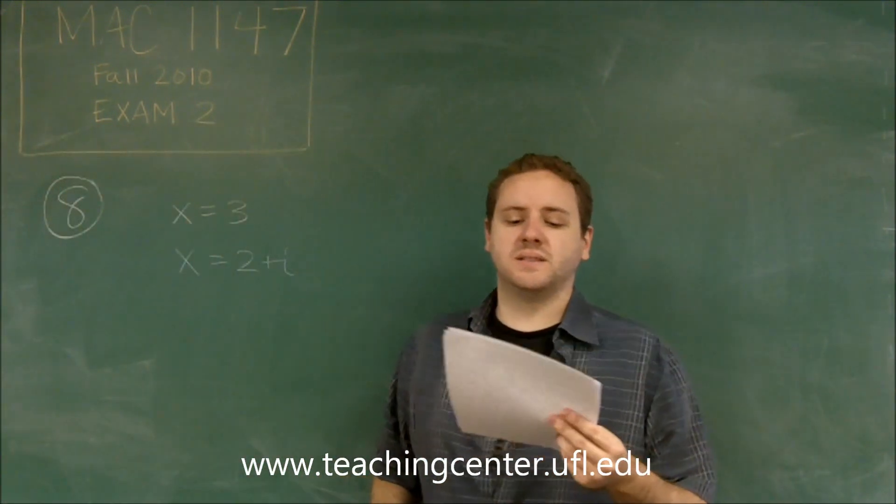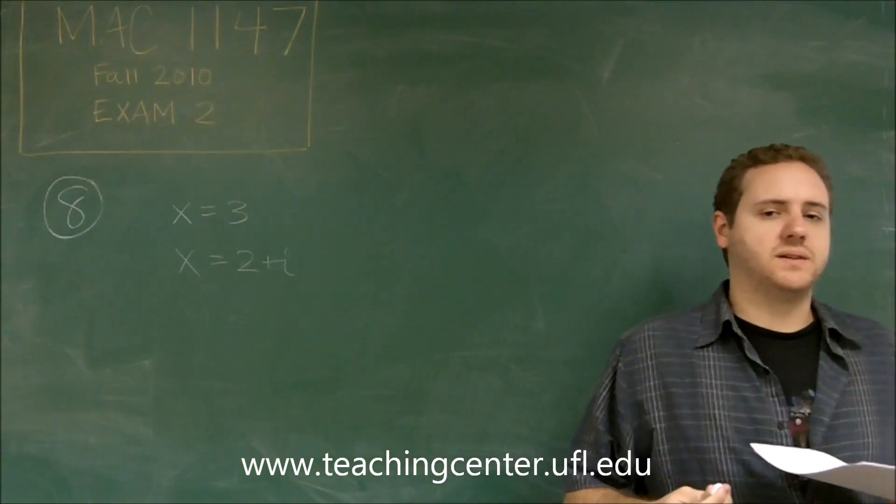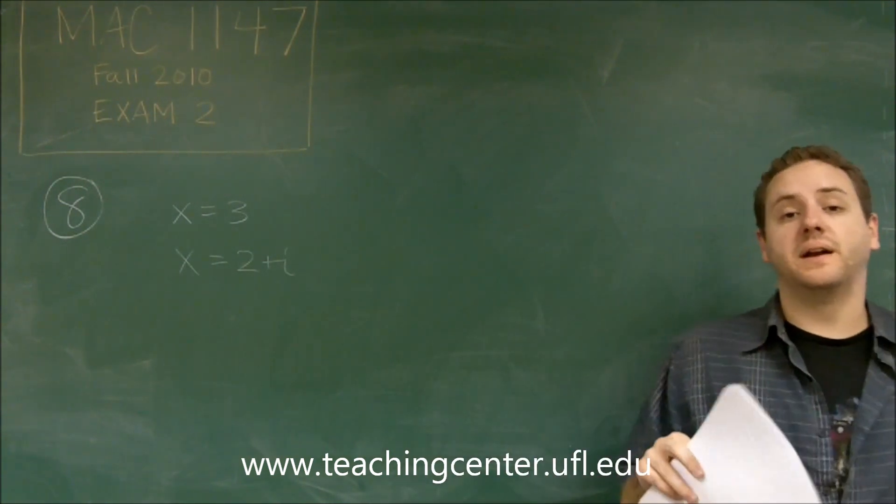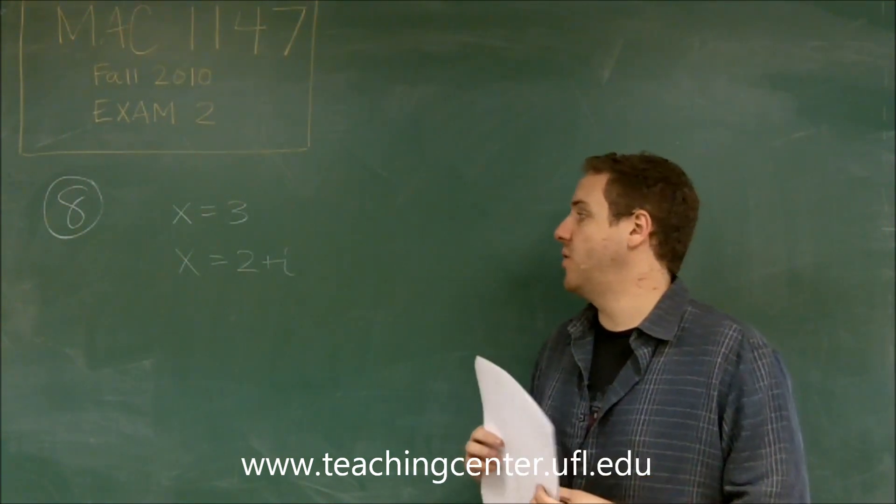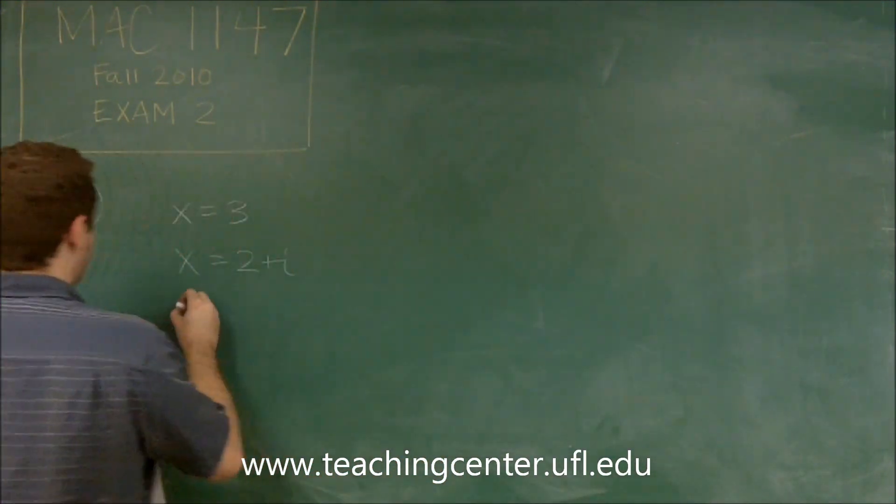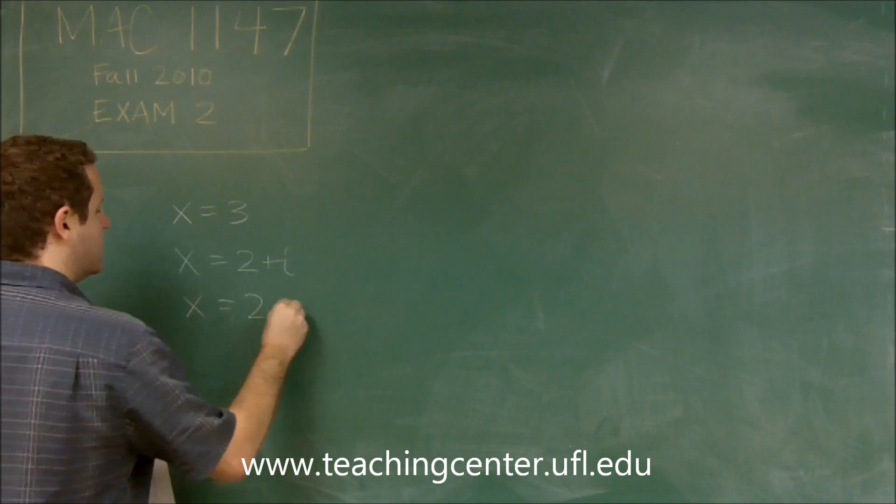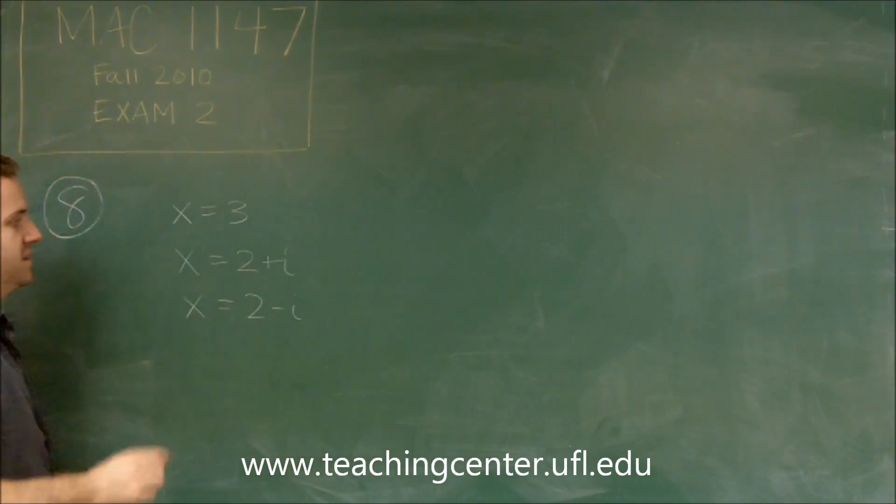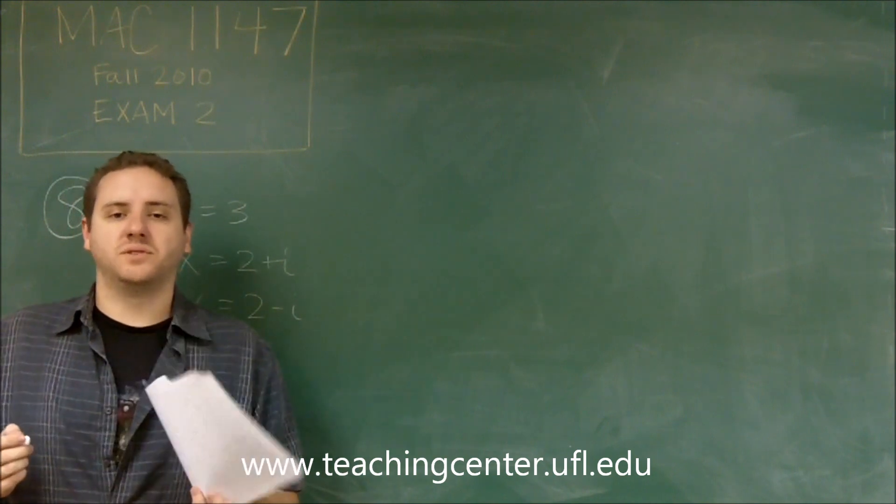So what's important to note here is that when you have a complex zero, they always have to come in pairs of complex conjugates. So if you know that two plus i is a zero, you also know then that two minus i has to be a zero. So here's our three zeros, and that makes sense because we have a polynomial of degree three.